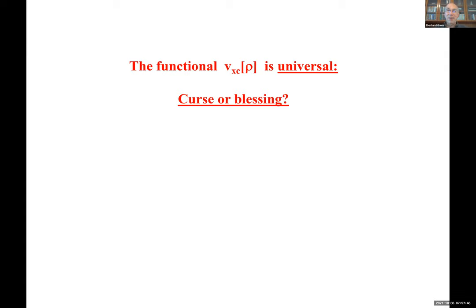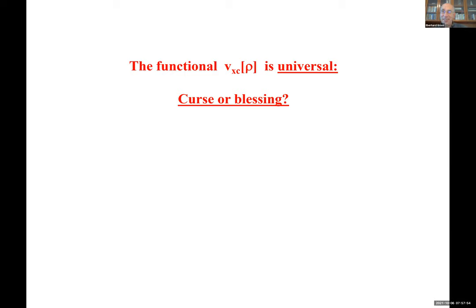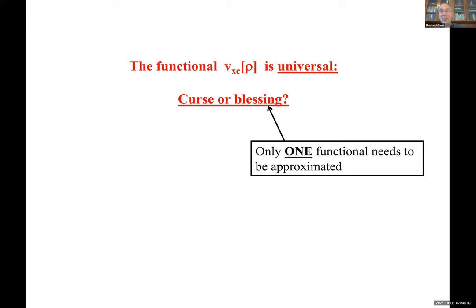I want to make a statement about universality — continuing the earlier discussion. Is universality a curse or a blessing? It's both. On one hand it means there's only one functional that needs to be approximated; once you have a good approximation, everything is solved. But that also tells you it's hard to find good approximations that work for everything. Looking at the history of DFT, even the first step from LDA to GGA took 25 years with many groups involved — it's not a simple thing.